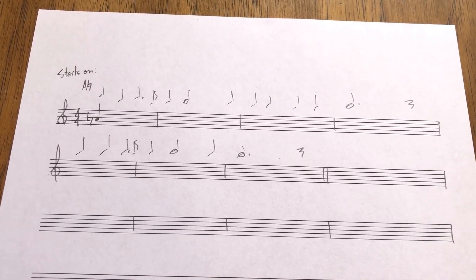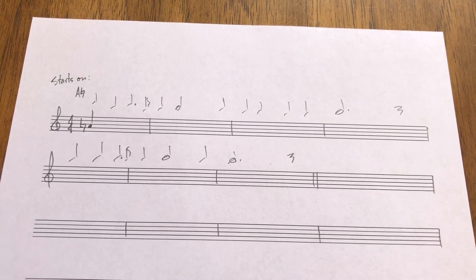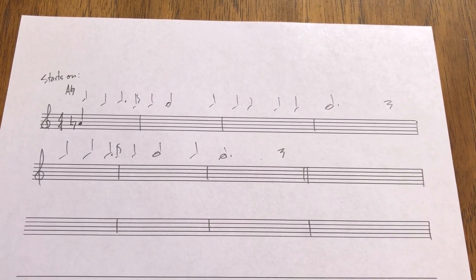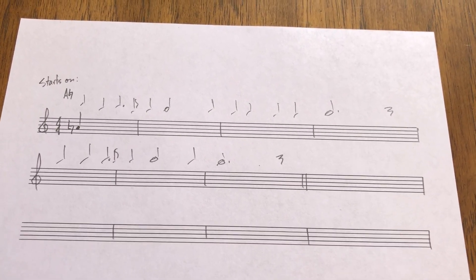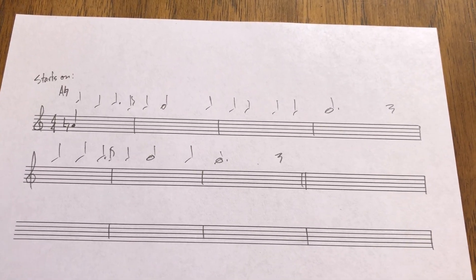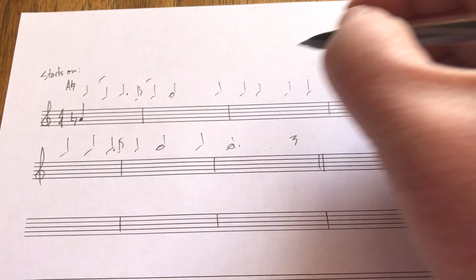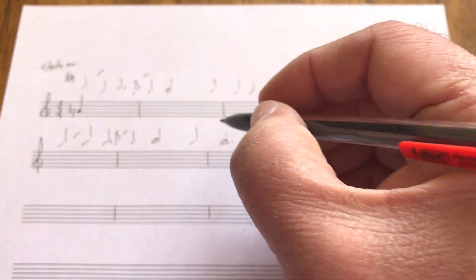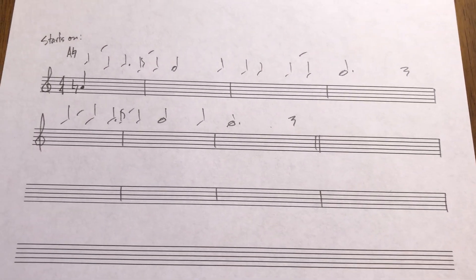Now we have to start thinking about what characteristics make this uniquely atonal. The melody will tell you what sorts of things to listen for. I heard an awful lot of half steps in there, and also a decent number of tritones. So what I'm going to do is try to find as many of those half steps as I can and mark them on my rhythm chart.